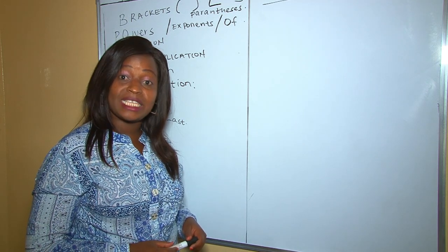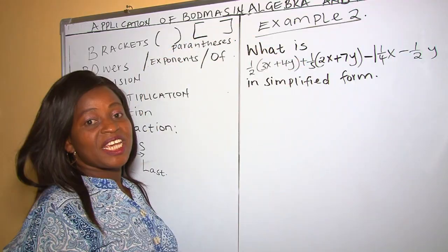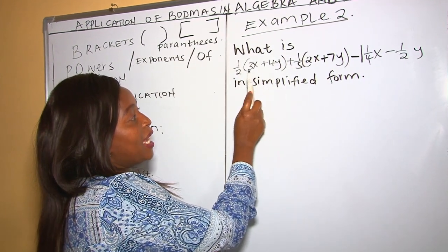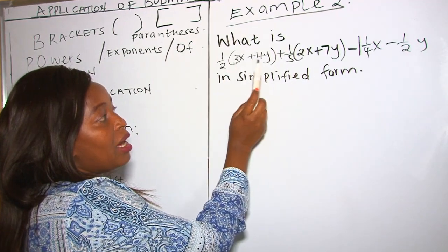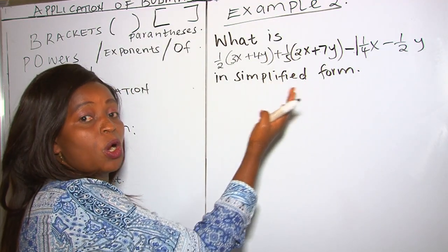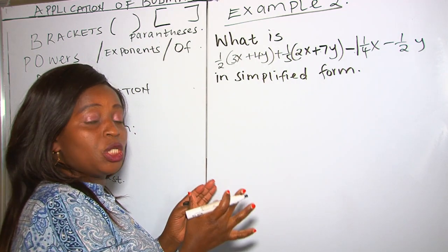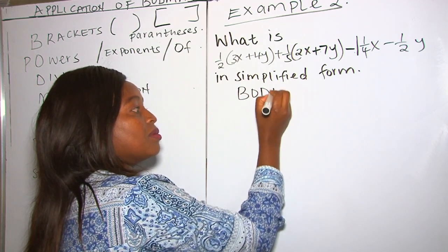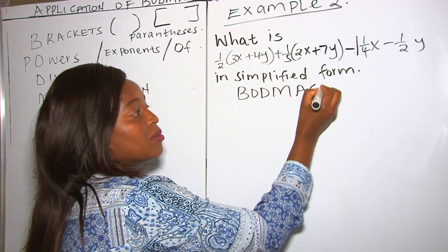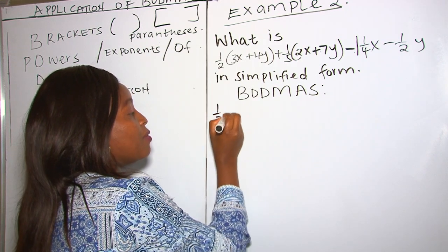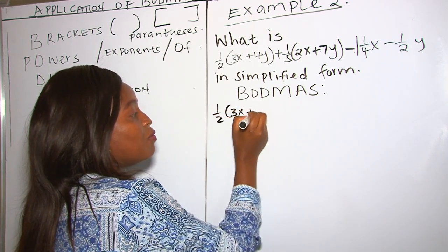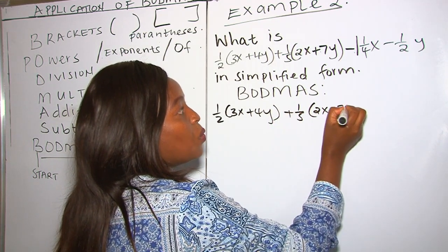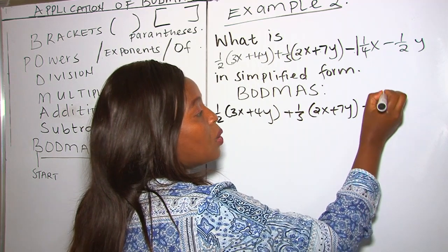That was Example 1, from KCPE 2015. Now for our second example, we apply BODMAS to an algebraic expression with fractions. You can see there are different operations applied, so to simplify we need to apply BODMAS. The expression is: one-half times (3x + 4y) plus one-fifth times (2x + 7y) minus one and one-quarter x minus one-half y.